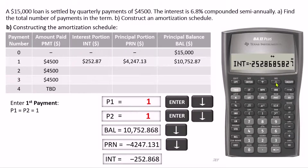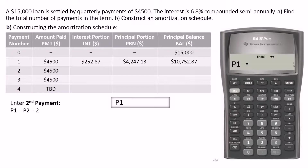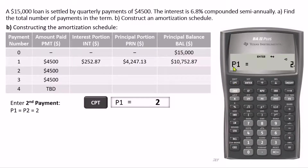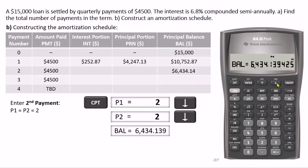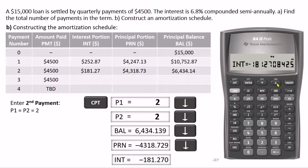For the second payment, you can either manually enter 2 for P1 and P2, or alternatively, since the range is already set, just press Compute. When you press Compute, P1 will be set to 2 and P2 also set to 2. Then use the down arrow key to scroll down and see the balance, principal, and interest portions of the second payment. Remember to round these numbers to two decimal places.